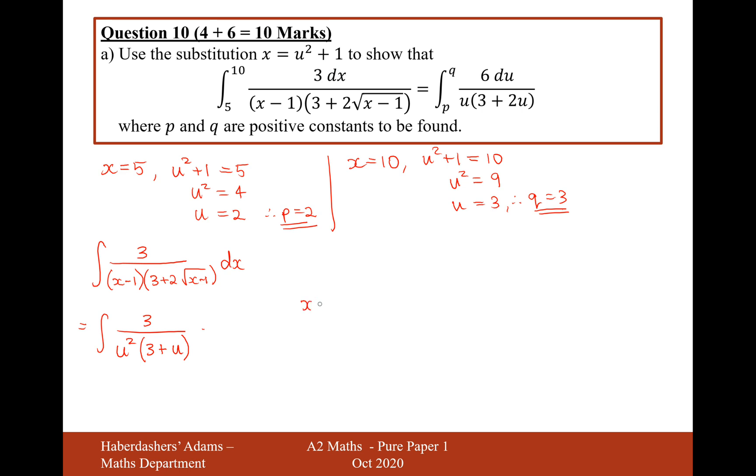So it's going to be x equals u squared plus 1. Differentiate your substitution, so dx by du is going to equal 2u. So therefore dx is equal to 2u du. So it's going to be times 2u du, and that will cancel out one of our u's. So u cancels with one of those u's. The 3 turns into a 6 now, so it's 6 over u(3 plus u).